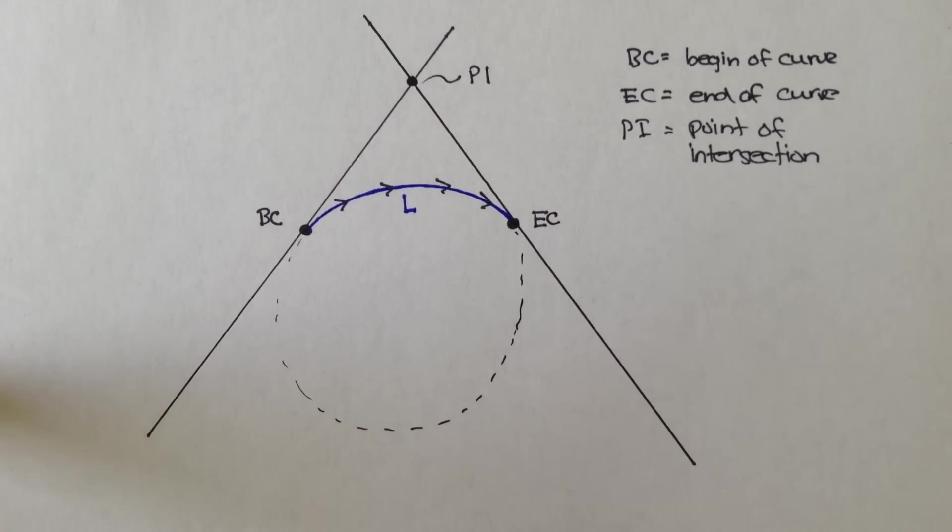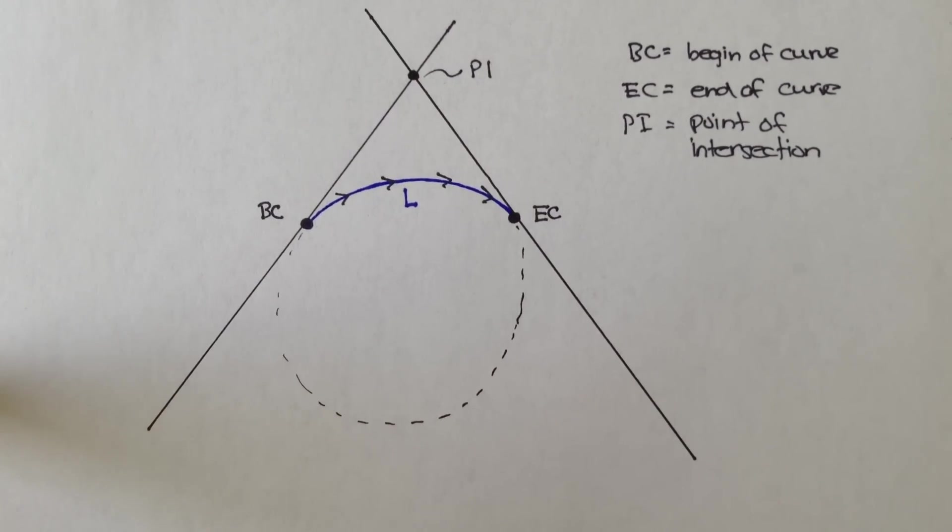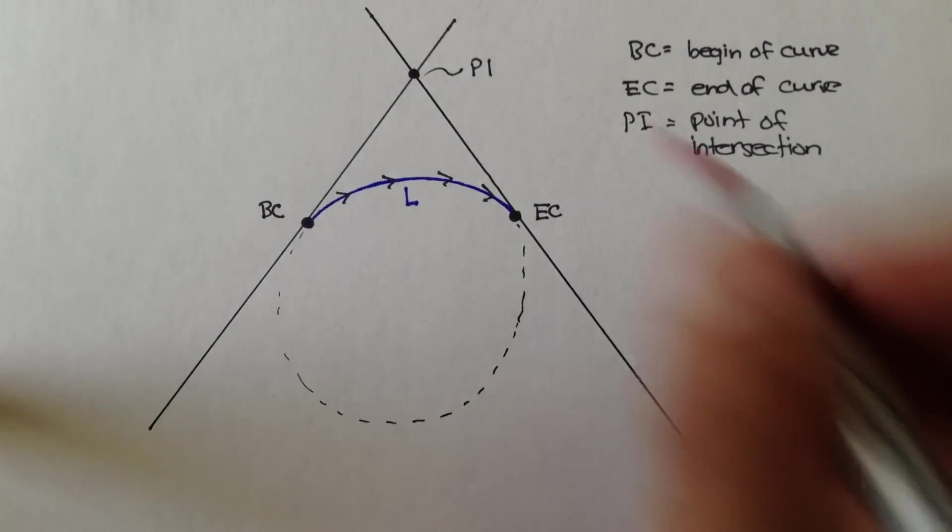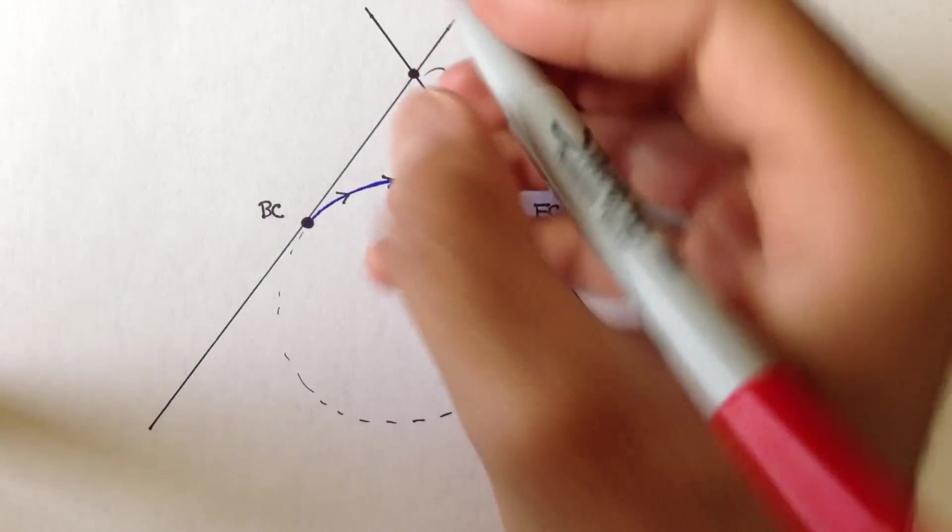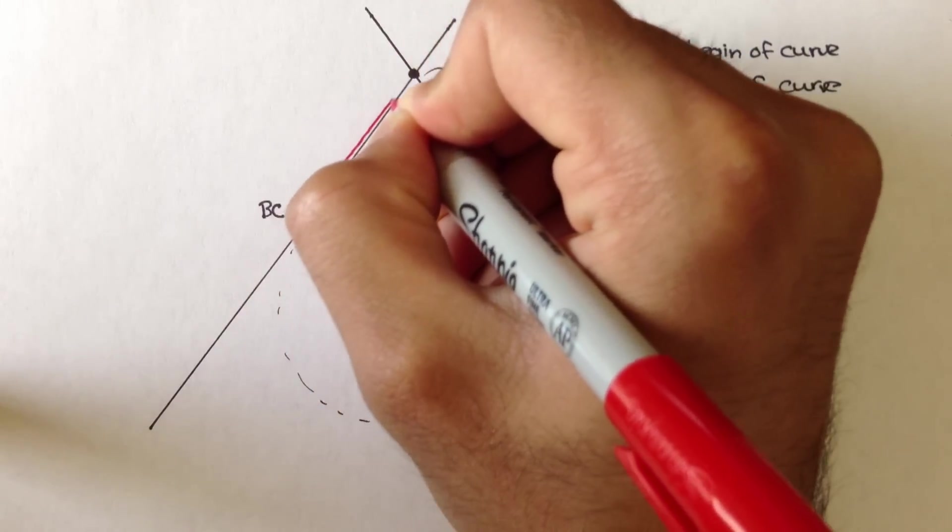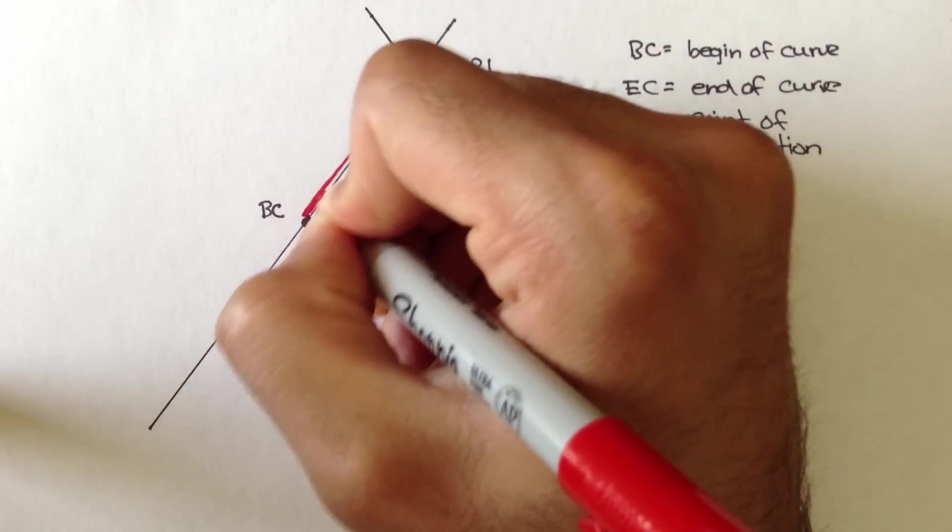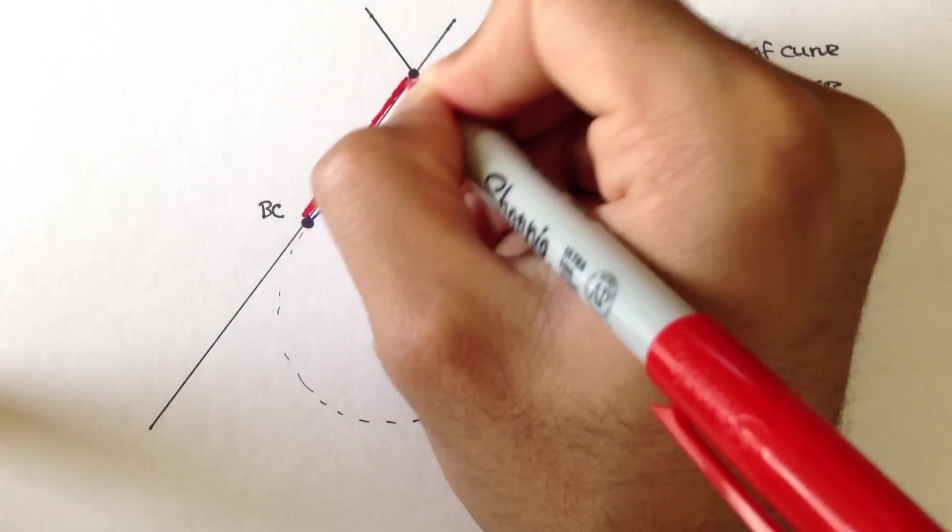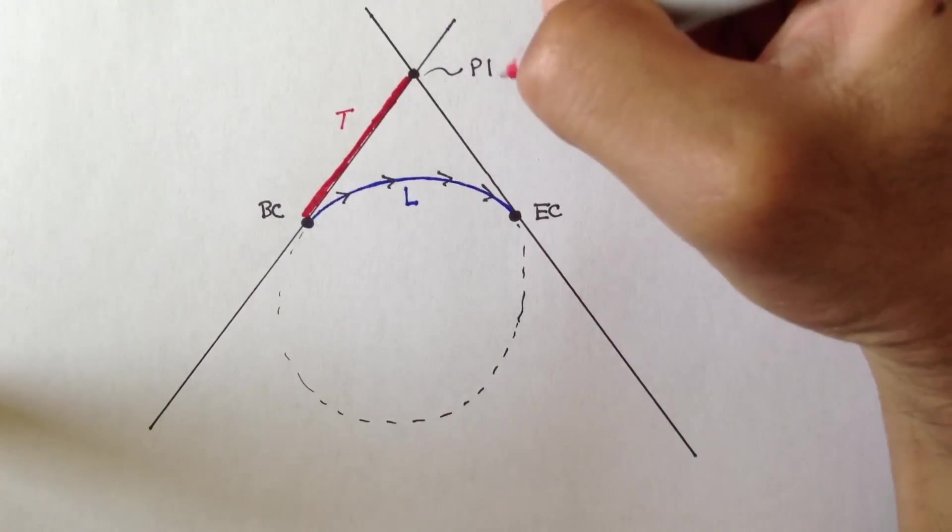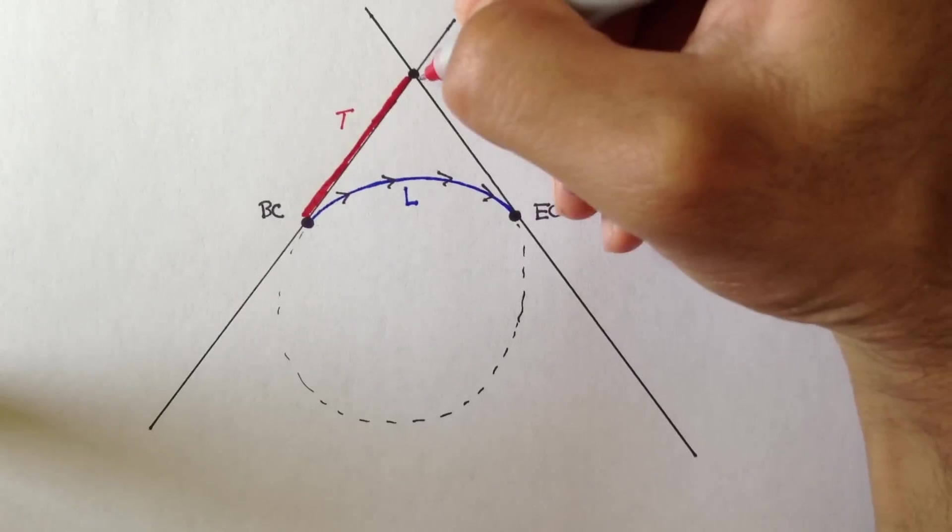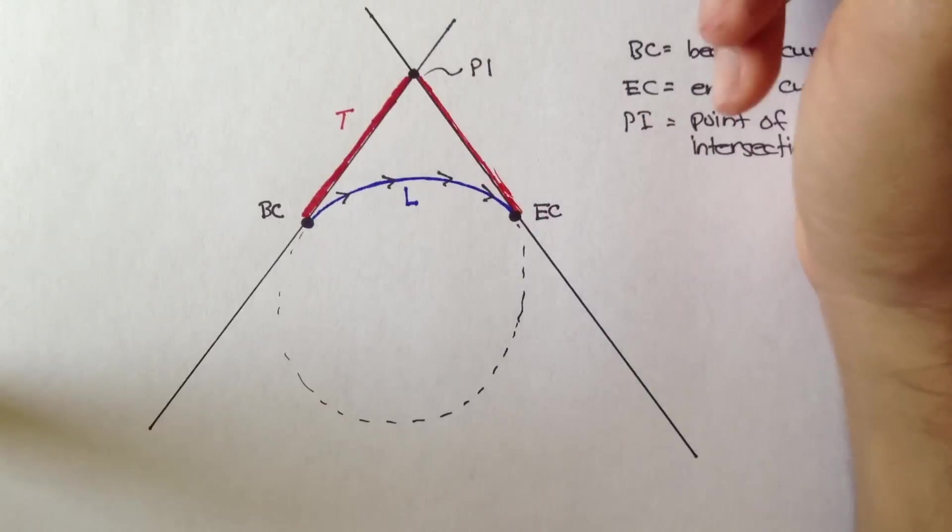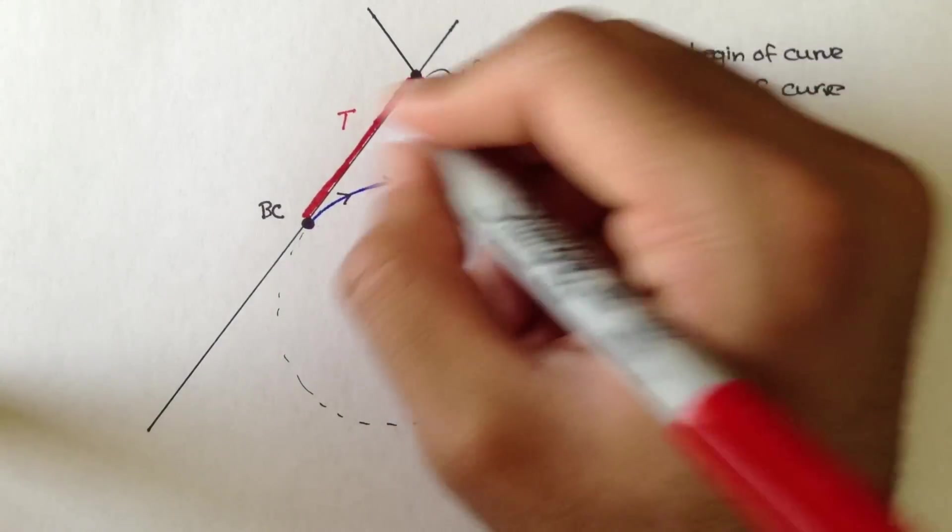Now, if we were to draw, well, let's define these two distances first. From the BC to the point of intersection, this distance right here, we're going to call that T. And the point of intersection to the EC, so from the point of intersection to the EC, that's also called T. They're the same distance.